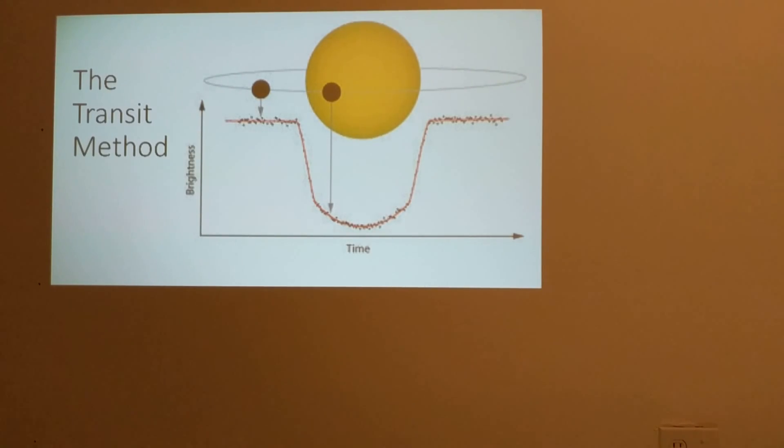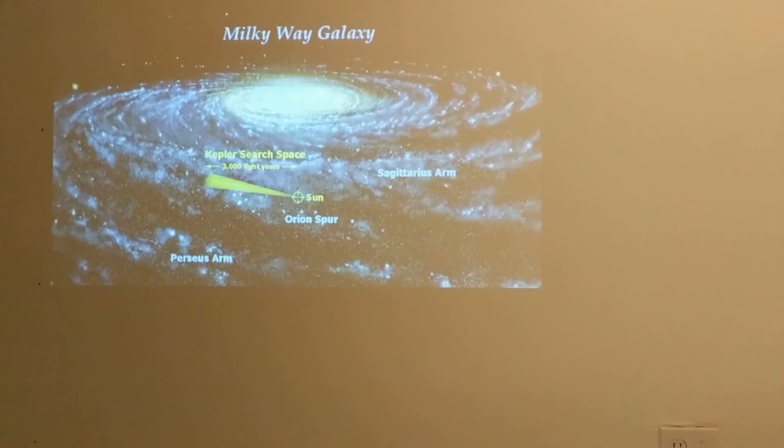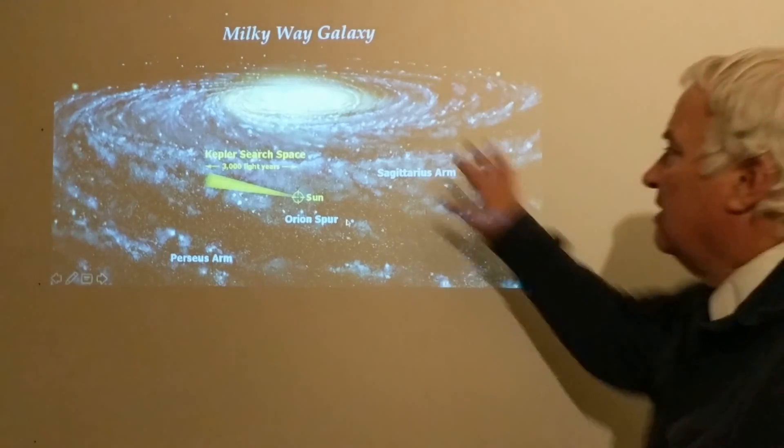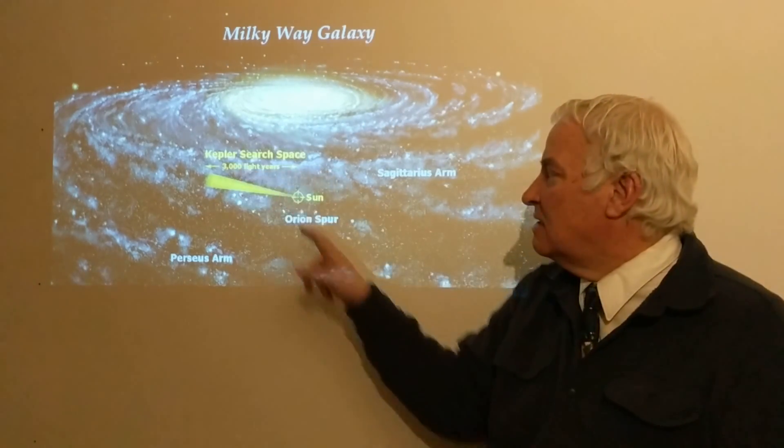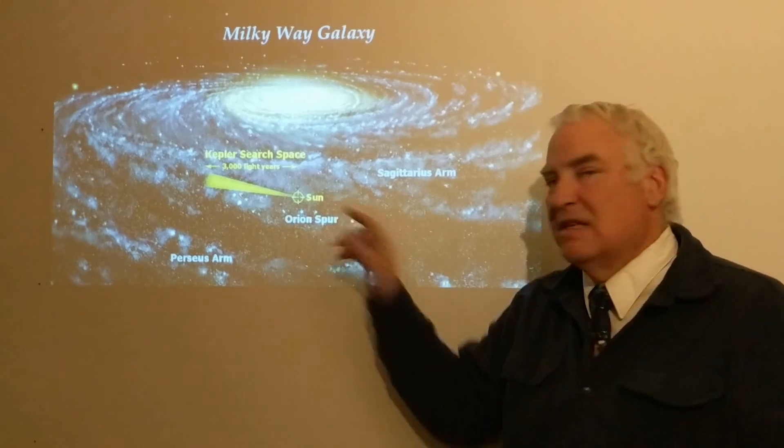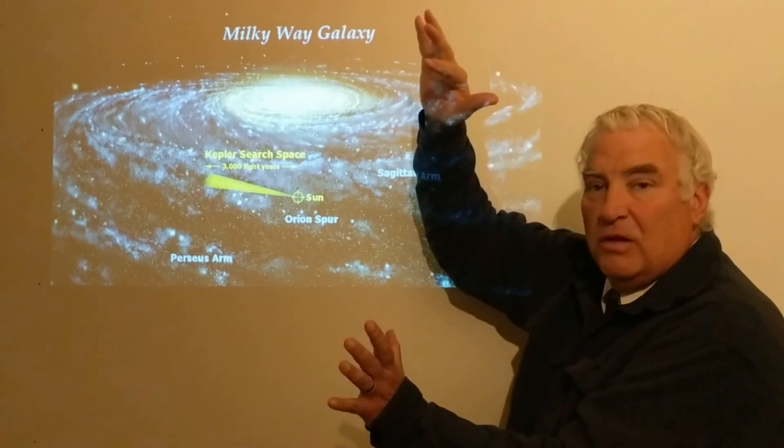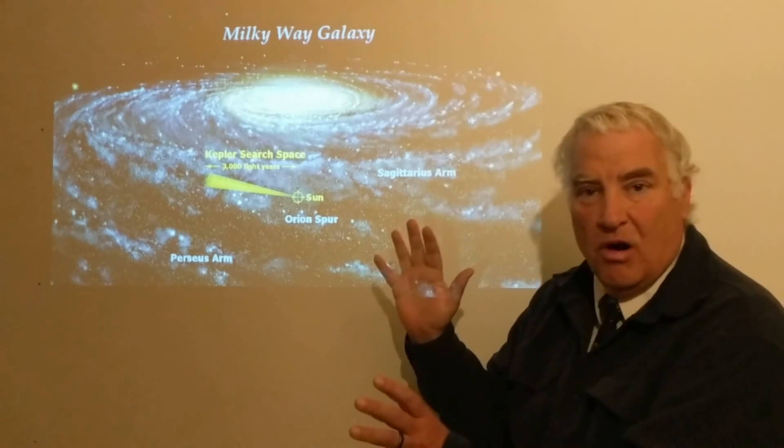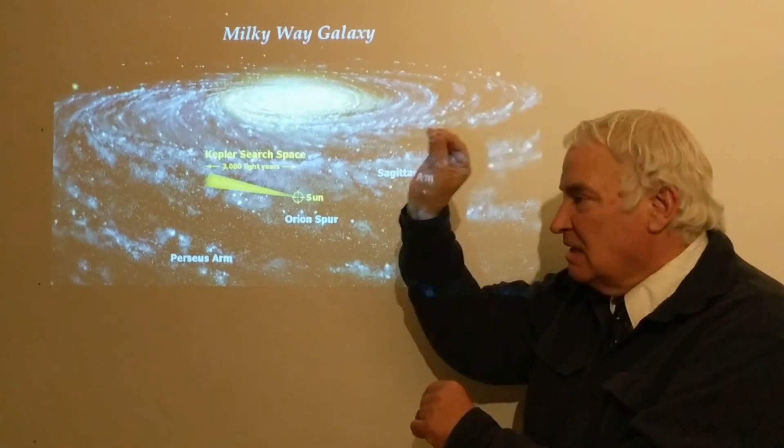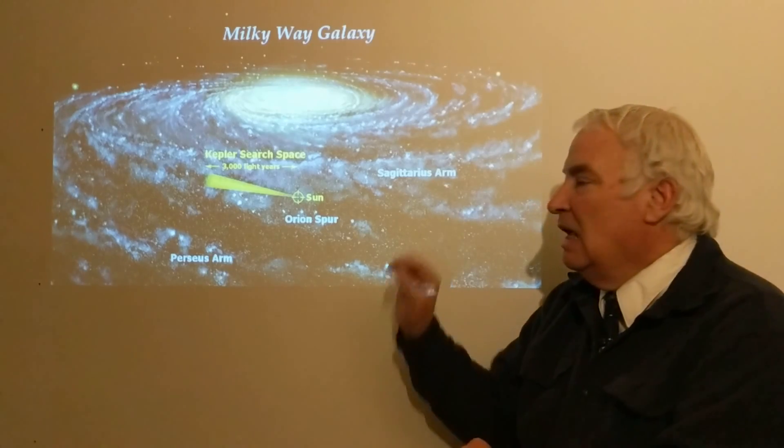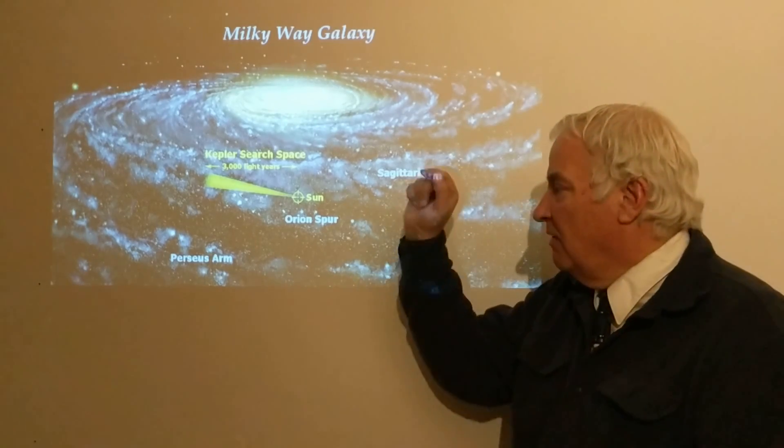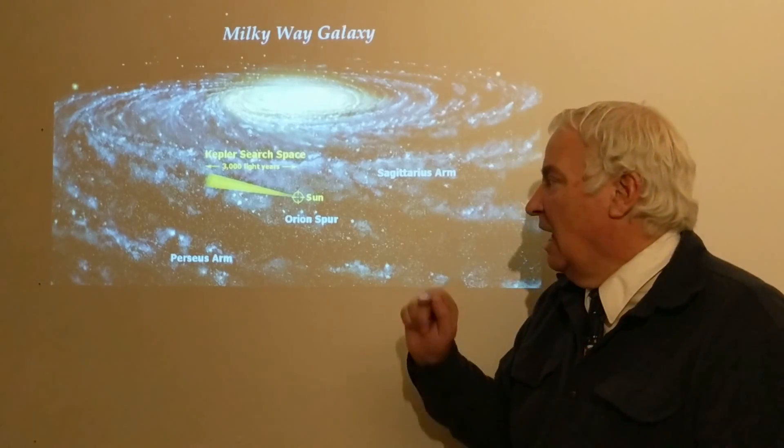The transit method has been very successful at discovering exoplanets, and the Kepler satellite in particular has done so. If we look at the Milky Way galaxy in this diagram, the Kepler search space shows what Kepler does. It looks at a particular field of view in the constellation of Cygnus over a million stars, or roughly a million stars, constantly looking at their brightness for several years.